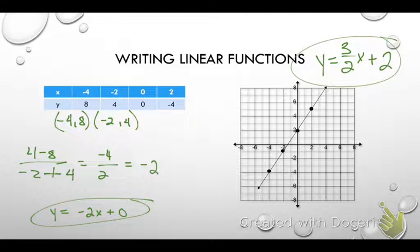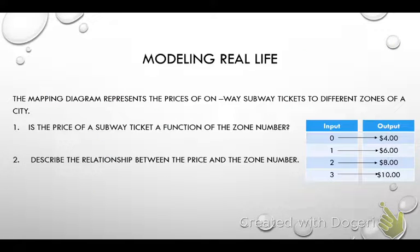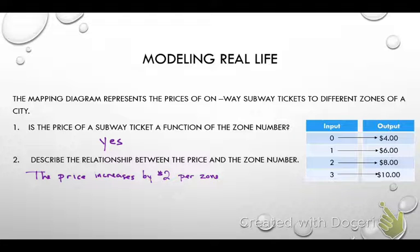Now we had modeling real life question. Is the price of a subway ticket a function of the zone number? Meaning, does every input have one output? What do you think? Yes. Now describe the relationship. This is where you would look for a pattern. What is the relationship between price and zone number? What's the relationship, guys? What happens to the price? It increases by $2. Yeah, the price increases by $2 for each zone that it passes through. I said per zone.